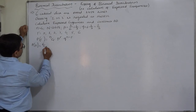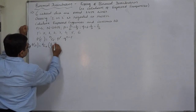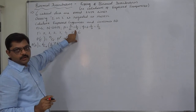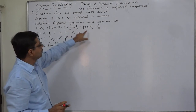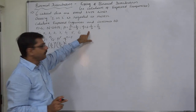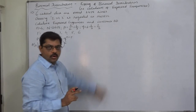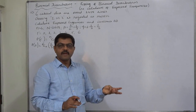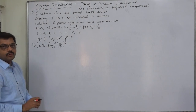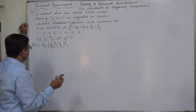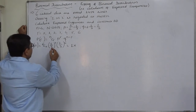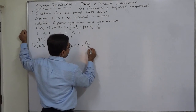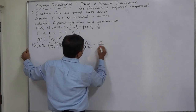P(0) equals 6C0 into (1/3)^0 into (2/3)^6. Here p = 1/3 and q = 2/3. 6C0 is 1, (1/3)^0 is 1, and (2/3)^6 is 64 by 729. So P(0) = 64 by 729.